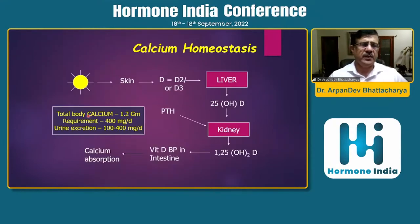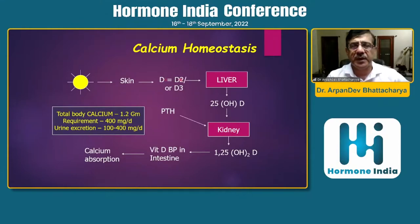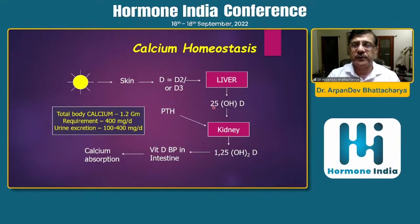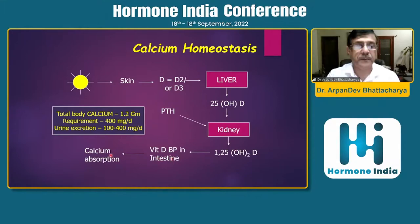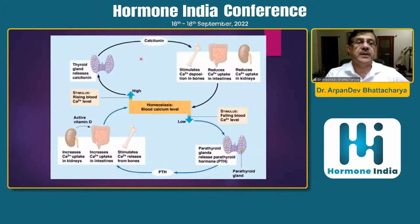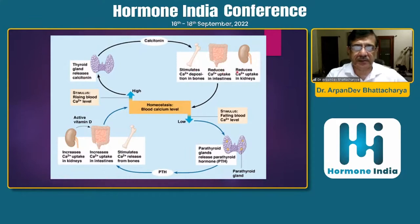A quick review of vitamin D: sunlight acts on the skin to produce vitamin D2 or D3. In the liver, it becomes 25-hydroxy-D. In the kidney, influenced by PTH, 1-alpha-hydroxylase converts it to 1,25-dihydroxyvitamin D, the active form, which promotes calcium absorption via vitamin D binding protein. Calcitonin from the thyroid stimulates calcium deposition in bone and reduces calcium uptake — so high calcitonin gives low calcium.